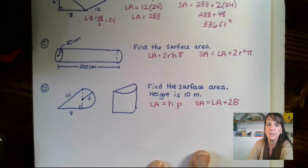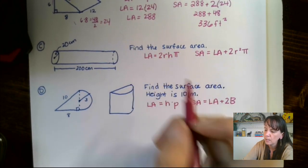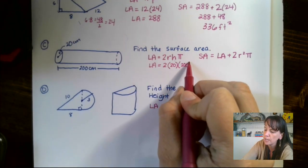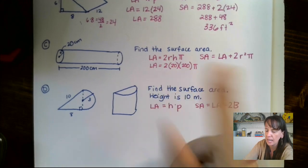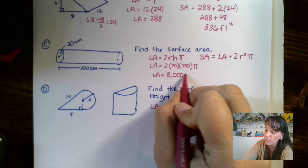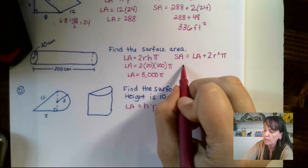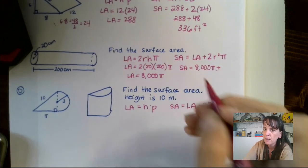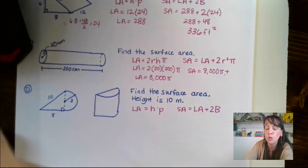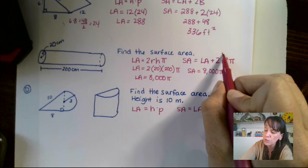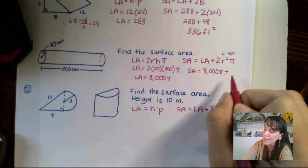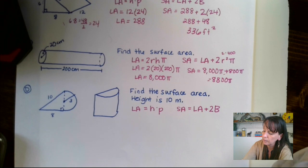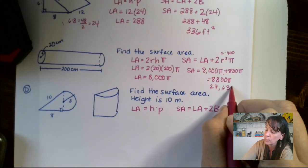Next is a cylinder. We find the lateral area: 2 times the radius times the height times pi. The radius is 20 and the height is 200, so 2 times 20 times 200 gives us 8,000 pi. For the surface area, we add 8,000 pi plus 2 times the radius squared times pi. The radius squared is 400, times 2 is 800 pi. So total surface area is 8,800 pi, which if you plug into a calculator is approximately 27,632 centimeters squared.